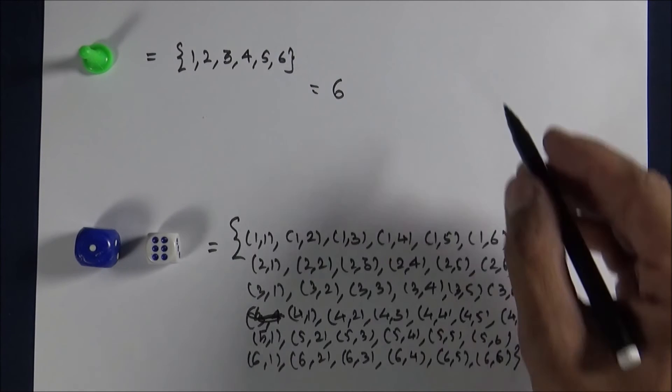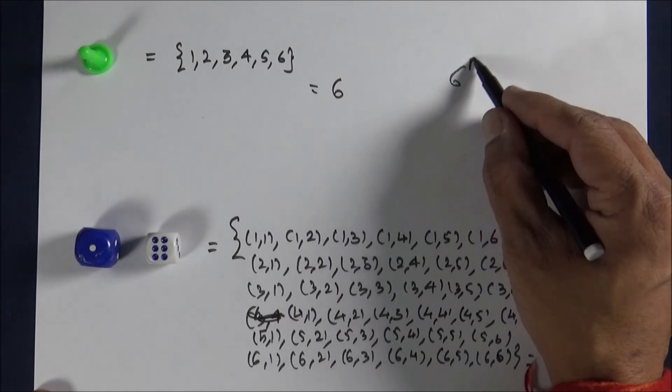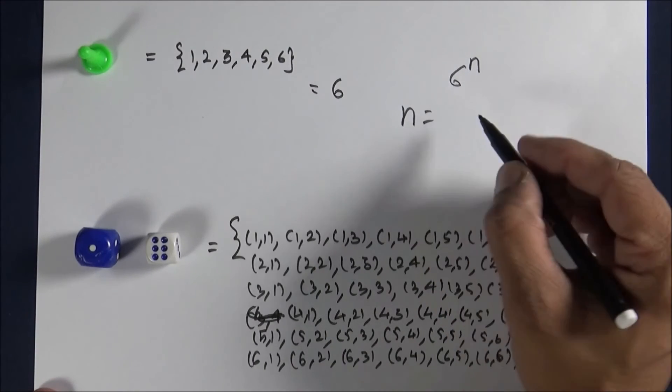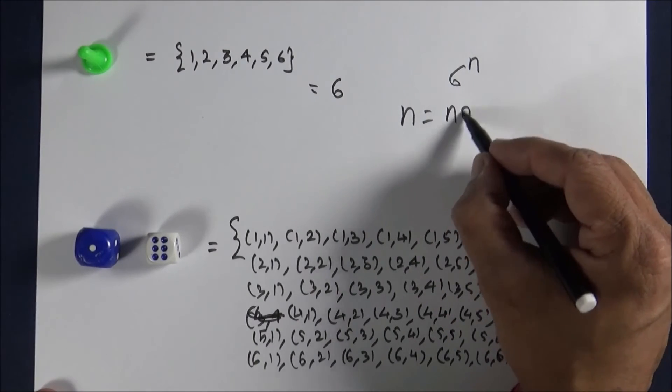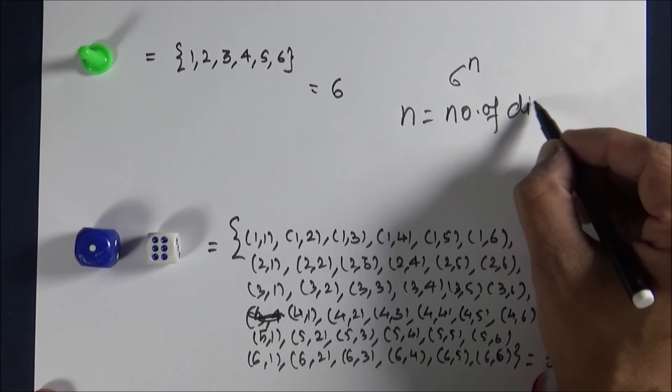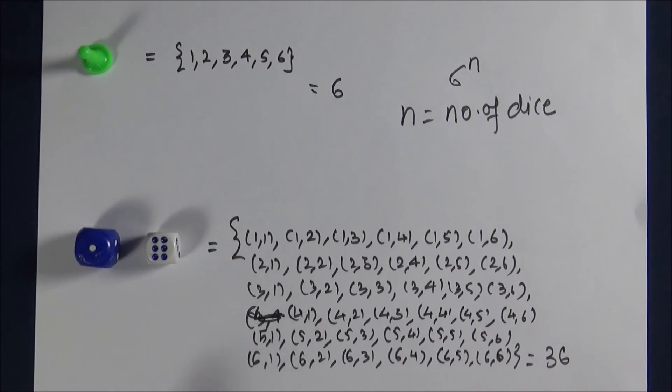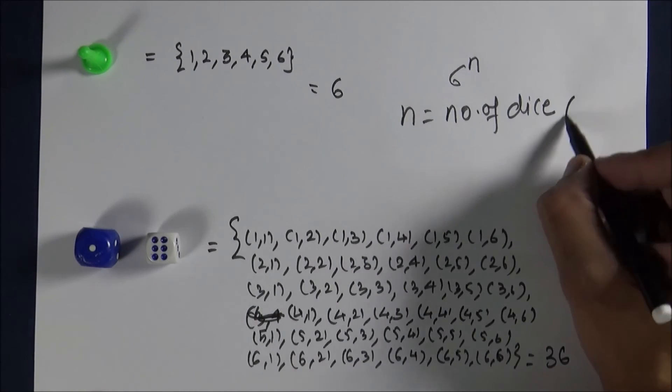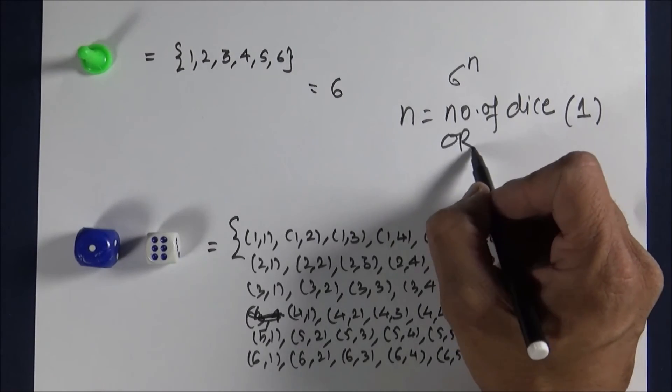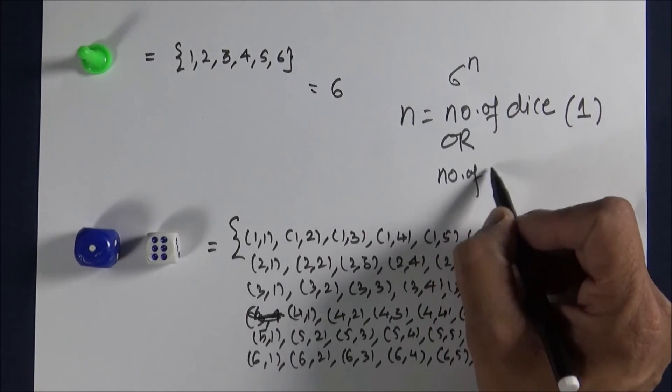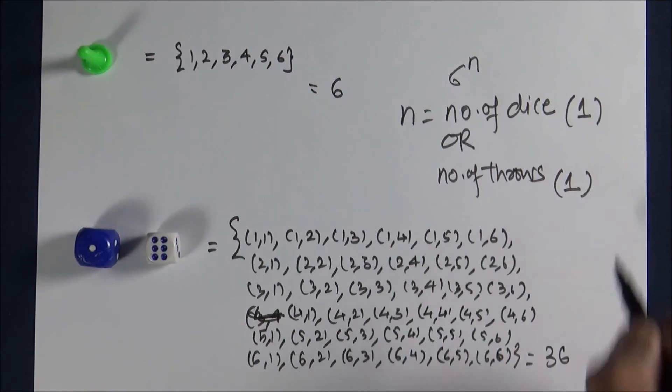So the formula turns to 6 to the power n, where n is number of dice when you throw them once in a single throw, or number of throws when the die is one, when there is only one die. Now I will take you to playing cards.